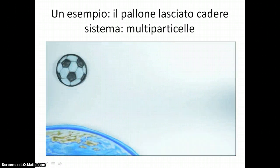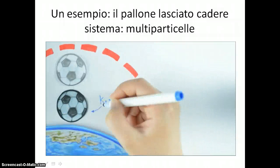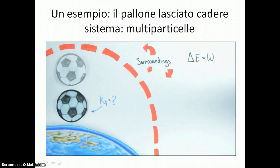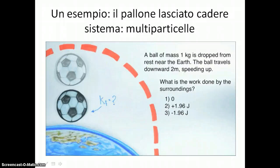Now let's take this same situation, but choose the system differently. Let's choose the system to include both the ball and the Earth. Again, we can ask the question: what's the final kinetic energy of the ball? Starting from our energy principle, we need to identify the agents in the surroundings and compute the work done by the surroundings on our system. Let's compute the work done by the surroundings on this multi-particle system.